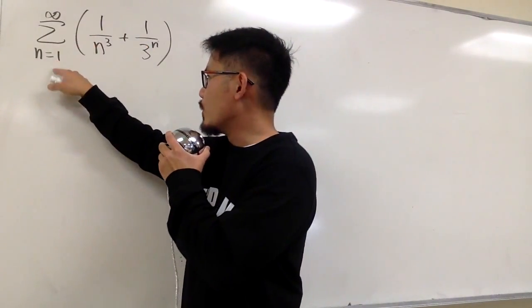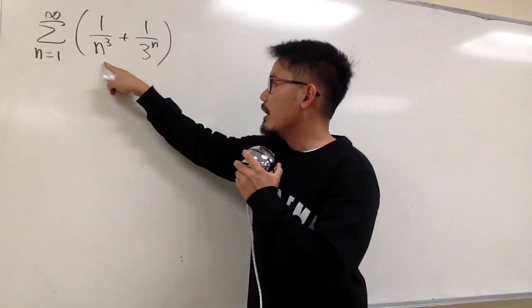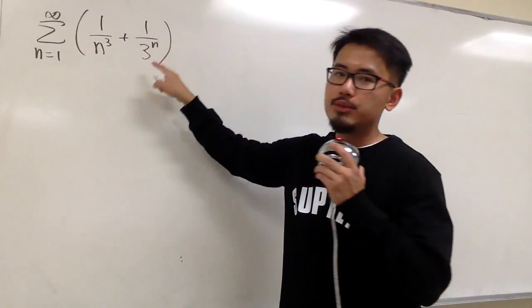Converge or diverge, we have σ when n goes from 1 to infinity, parentheses, 1 over n to the 3rd power, plus 1 over 3 to the nth power.